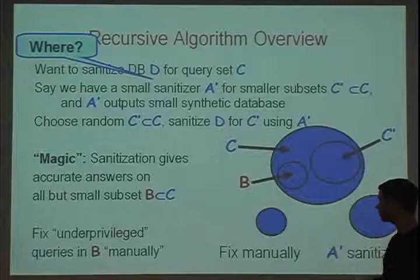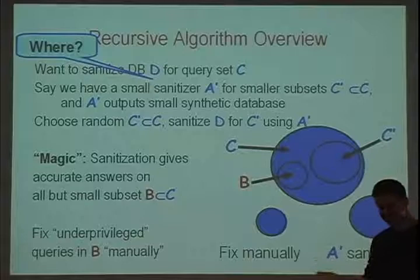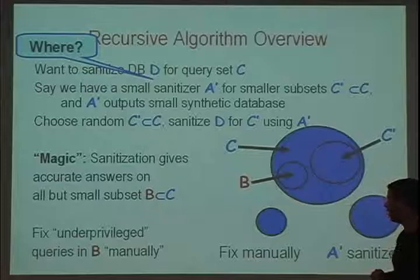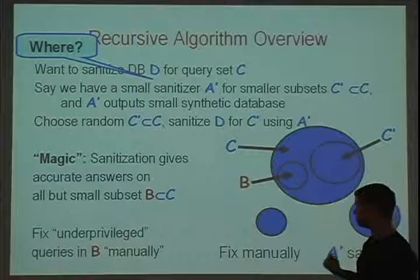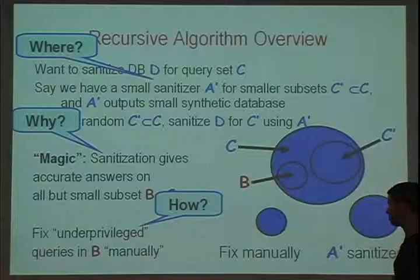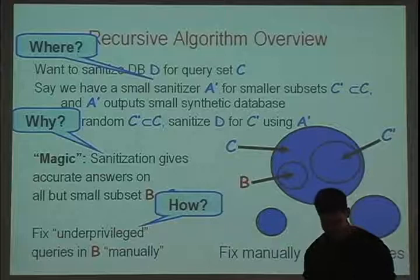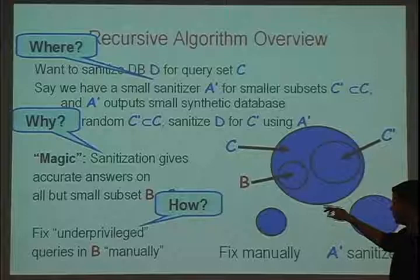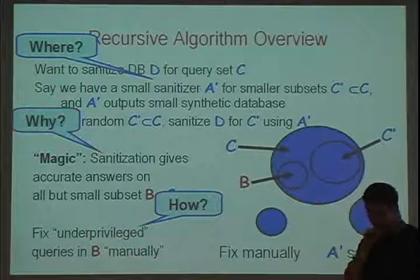There's some small 'bad' set of queries on which the synthetic database doesn't give accurate answers, but everywhere else we get accurate answers essentially for free. So we're closer to where we want to be. We still have this annoying set of queries that are bad or underprivileged without accurate answers, but we can take them aside and fix them — get good answers for them manually. In the end, we have accurate answers to all the queries we want.